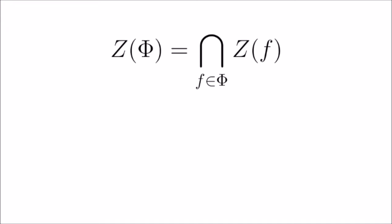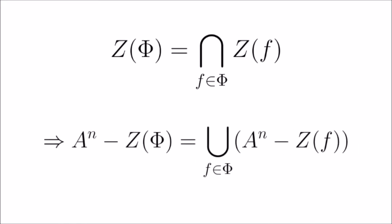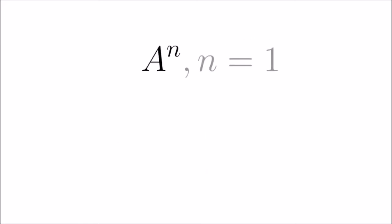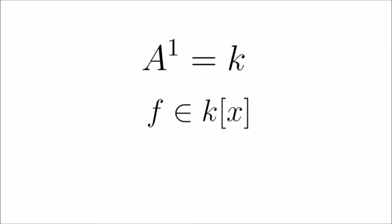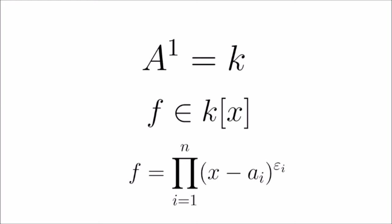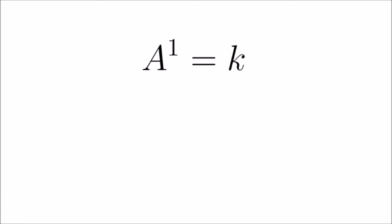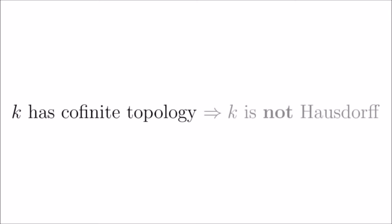Since that introduction of the topology was quite sudden, let's work with it to get some footing. Our closed sets are algebraic sets — intersections of zero sets for polynomials — so our open sets are unions of sets of the form A^n minus Z(f). Consider the specific example of A^1 for n = 1, which is just equivalent to our base field k. A polynomial in one variable factors into n distinct roots of potentially different multiplicities, so every zero set is a finite set of zeros. Thus all closed sets are finite, and since any finite closed set of A^1 is a zero set of a polynomial, k has the cofinite topology — in particular, going against normal topological intuition, this topology is not Hausdorff.